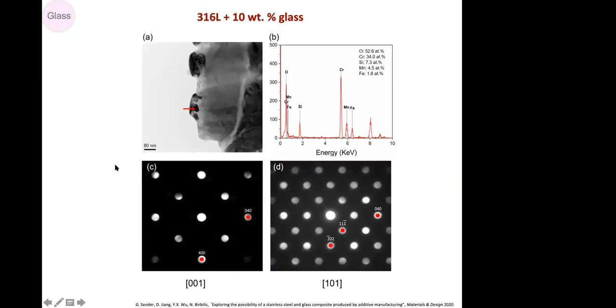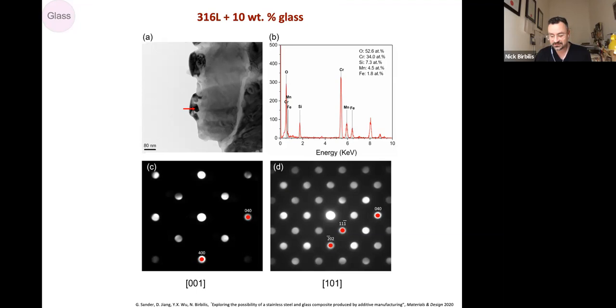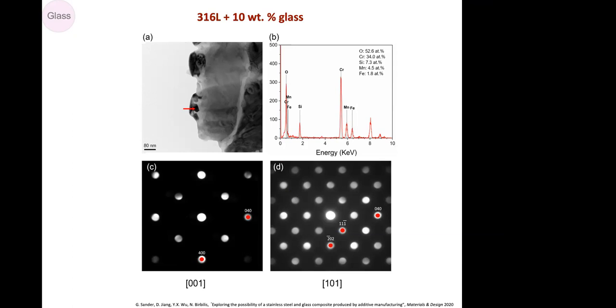So what actually happened is it turned out the glass at the temperatures of selective laser melting alloyed with stainless steel and a new phase was formed. And that's a silicon, iron, chrome, manganese, oxygen phase. The reason I'm telling you here is this bigger study with corrosion work as well was just published last week.